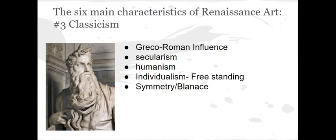The third characteristic is classicism — a Greco-Roman influence from ancient Greece and ancient Rome. There is also a secular idea, meaning not all art is based on religious icons. Looking at the statue on the left, it has very distinct features and there was a lot of care and effort that went into making this person look like an individual. Compared to pre-Renaissance art where figures were generic, this person looks unique. There is individualism — figures are freestanding, representing the individual, which is one of the features of humanism — and there is symmetry and balance.